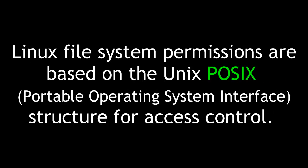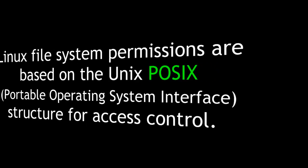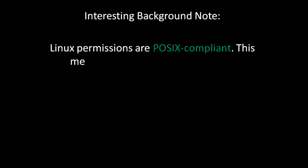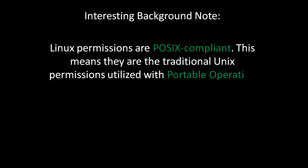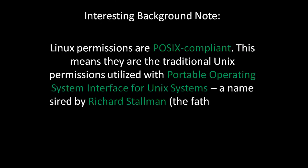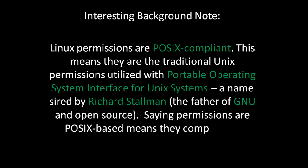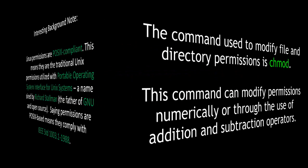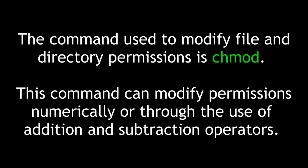Linux file system permissions are based on the Unix POSIX, or Portable Operating System Interface, structure for access control. The command to modify file and directory permissions is chmod. This command can modify permissions numerically or through the use of addition and subtraction operators.